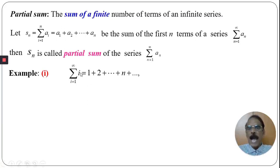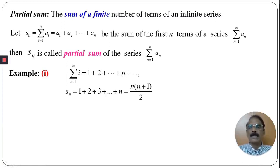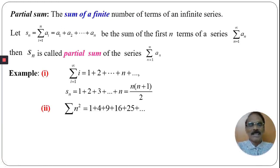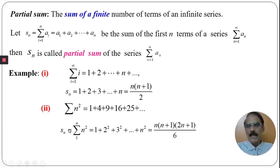Example: the series where the i-th term is i, running from 1 to infinity, is 1 + 2 + ... + n + .... Its partial sum s_n equals 1 + 2 + 3 + ... + n, whose value is n(n+1)/2. Consider another example: the series n², which is 1 + 4 + 9 + 16 + 25 + .... Its partial sum s_n = 1² + 2² + 3² + ... + n². We know the formula: the sum of squares of first n natural numbers is n(n+1)(2n+1)/6.